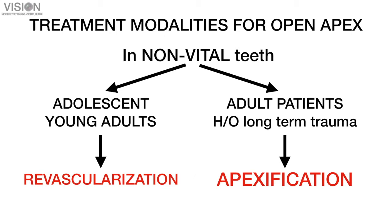That covers vital teeth treatment modalities for open apex situations. For non-vital teeth, patients can be categorized by age into adolescent or young adults and adult patients, who typically present with a discolored tooth and history of long-term trauma. In young adults there is still a possibility of continuing root development through revascularization. However, in cases with incomplete root development and long-term trauma history, the chances of root closure are significantly less, so we need to perform apexification or an artificial barrier to close the root apex.